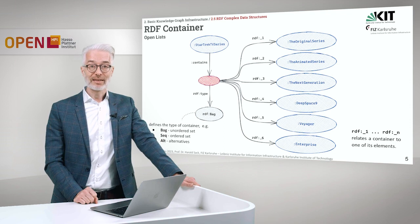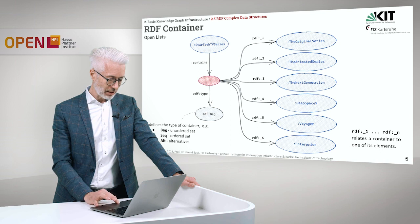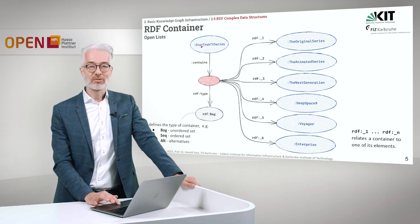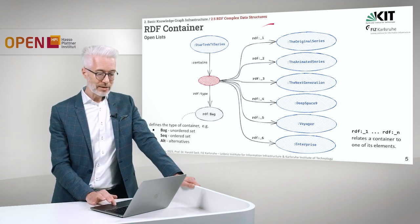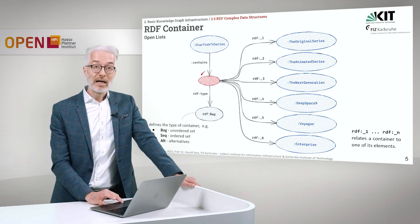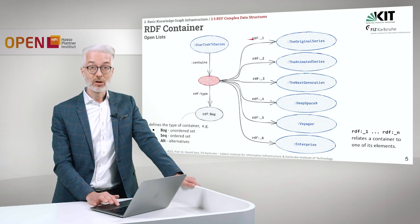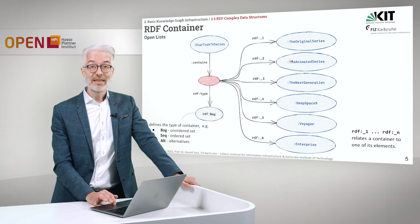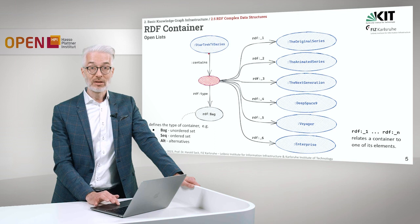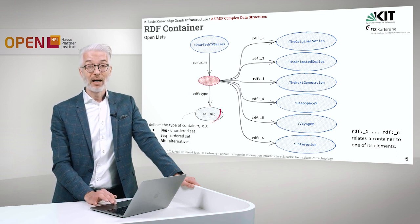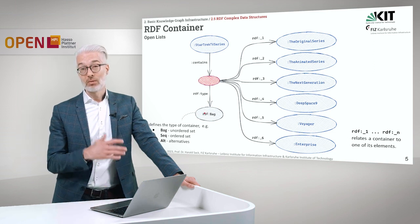Let's start with the container. We have here the Star Trek TV series and we want to aggregate all of the different TV series listed here: the original series, the animated series, next generation, Deep Space Nine, Voyager, Enterprise and so on. The kind of aggregation chosen here is a blank node which connects with specific properties called RDF underscore one, underscore two, underscore three and so on — each single TV series connected into the container of Star Trek TV series. We can also give it a type, for example this type of aggregation is called a bag, which means we don't care about the ordering.